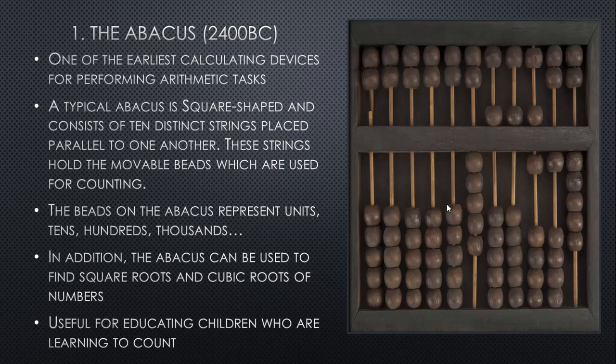The Abacus consists of 10 or 11 distinct strings placed parallel to one another. These strings hold the movable beads which are used for counting. The beads on the Abacus represent units, tens, hundreds, thousands, tens of thousands, hundreds of thousands — just like in the place value system in mathematics.